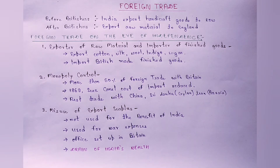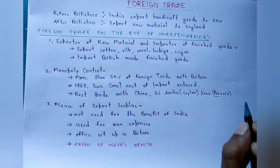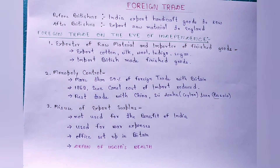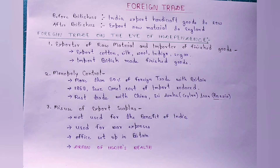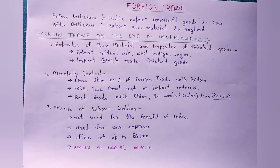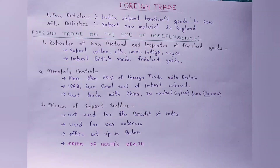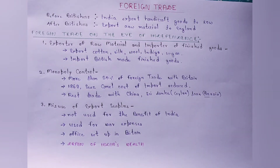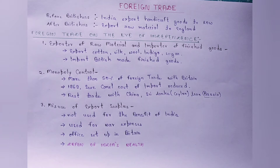और जो next 50% trade था वो India अपने neighbor countries के साथ trade किया करता था, जिसमें China, Sri Lanka (Ceylon), Iran (Persia) ये सब के साथ India trade किया करता था। और जब 1869 में Suez Channel open हो गया तो जो transportation cost था वो बहुत ही ज़्यादा कम हो गया। अब जो British थे उनको पूरा Africa travel करके नहीं आना पड़ता था, वो directly India आ सकते थे, जिसके कारण export और import बहुत ज़्यादा बढ़ गया।